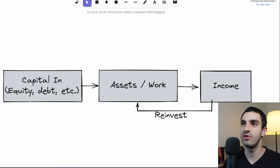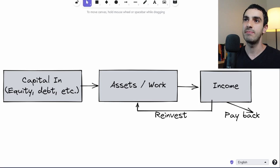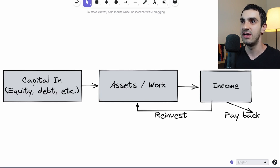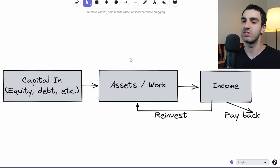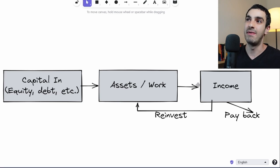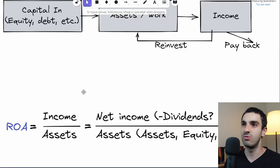Understanding how the return ratios work is essential to use them well when researching a company. The basis for return ratios is understanding the basic theory: a company takes capital — in equity, debt, or any other way — and employs this capital to create something. Let's say we took a hundred thousand dollars in equity from an investor and invested it in some factory or machine that creates an income. This income can then be either paid back through dividends, share buybacks, or reinvested to create more income.